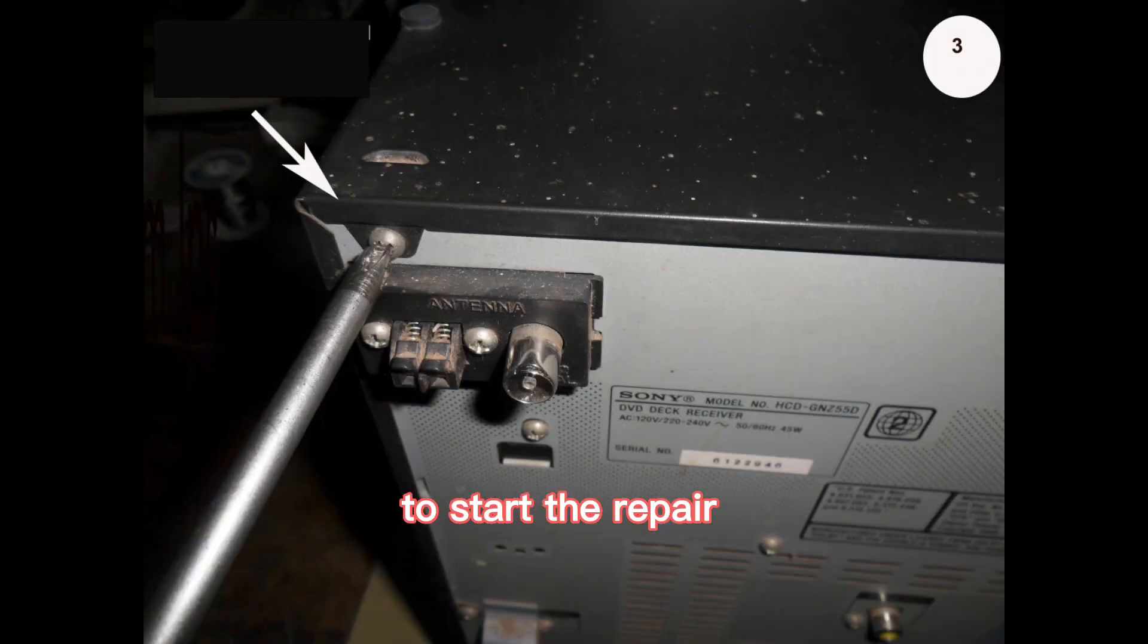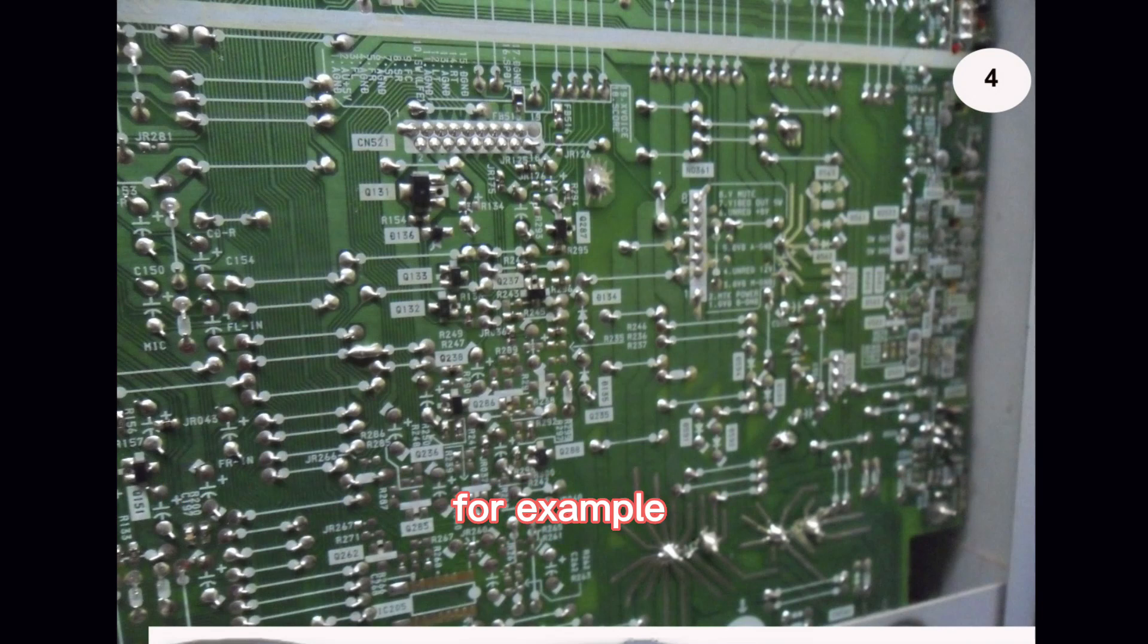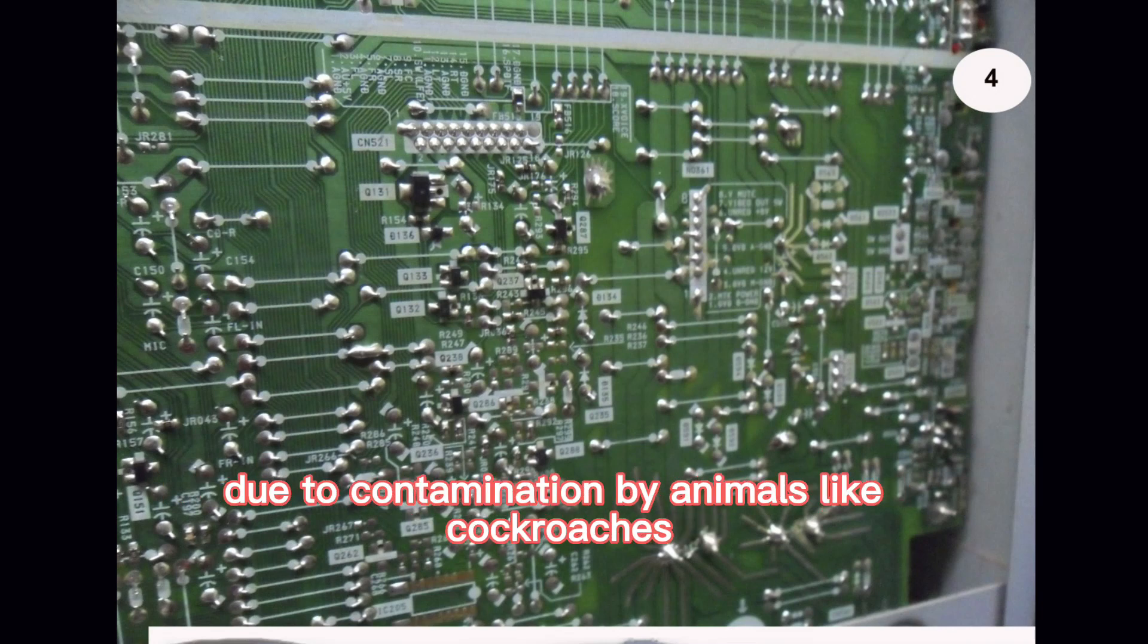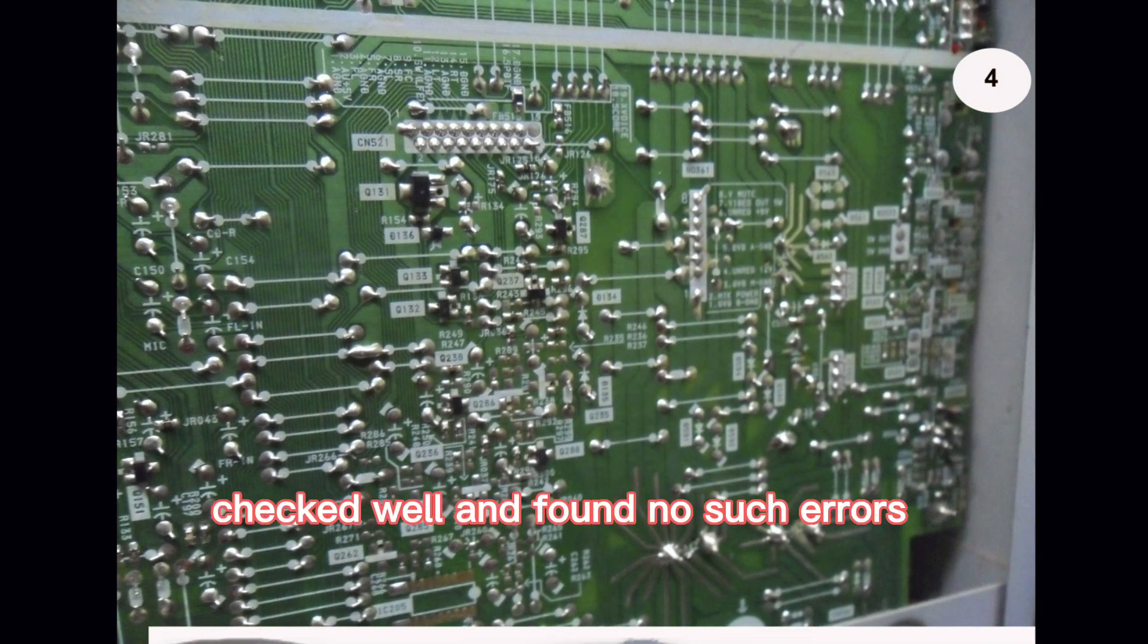To start the repair, I completely unscrewed the cover here. I first checked the main side board for visible defects. For example, we have seen many cases of damage to these PCB boards due to contamination by animals like cockroaches. Circuit path disappear. Checked well and found no such errors.